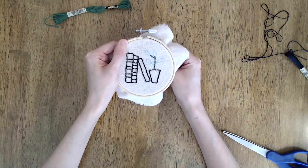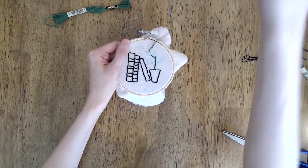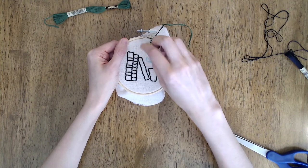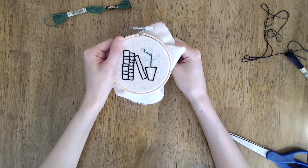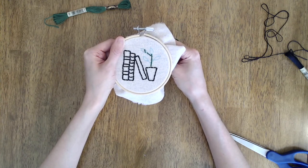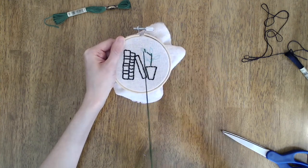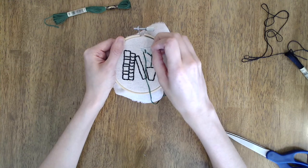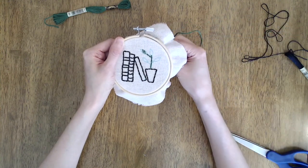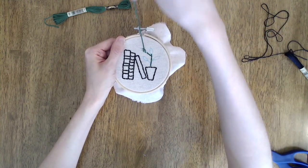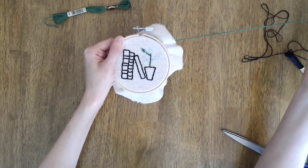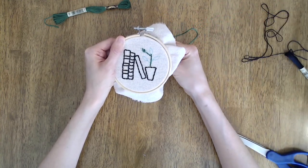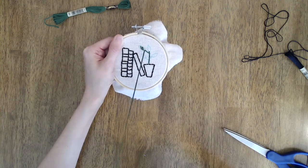Satin stitch is the stitch you're going to use for filling in areas of color. Really, it's just a bunch of parallel straight stitches that are close together. I'm also going to use this stitch to fill in some of the lines on the leftmost book spine. But you can really get as creative as you like with the details. You could do the whole thing in green. You could use no green. You can do whatever you'd like.